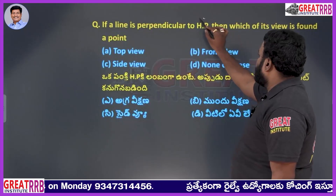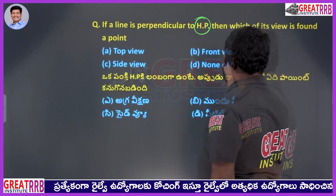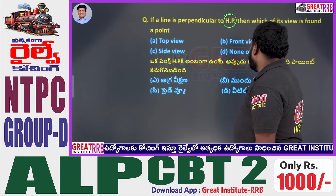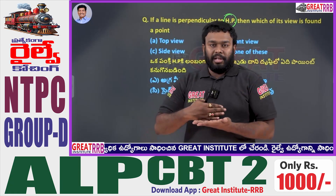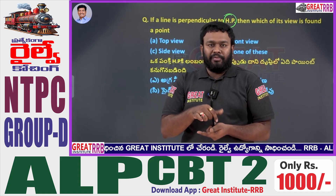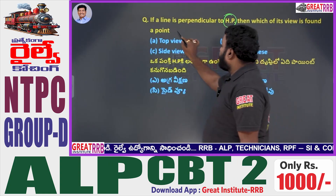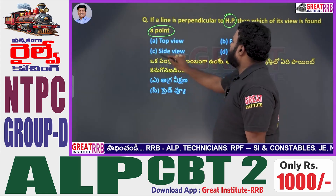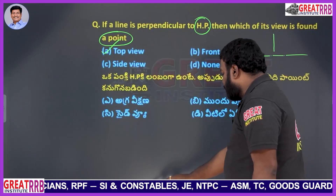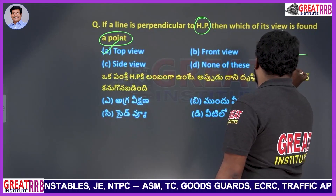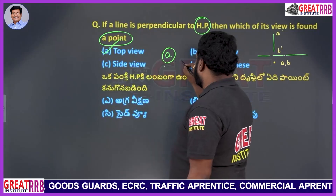In a line perpendicular to HP, which of its views is found as a point? A top view, B front view, C side view, D none. HP is the horizontal plane at the bottom. When a line is perpendicular to HP, the front view shows a straight line, while the top view shows a dot or point. Option A, top view, will be the right answer.